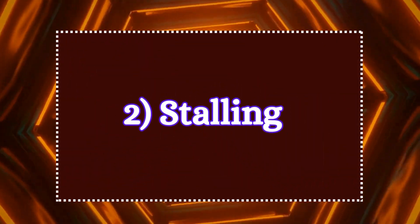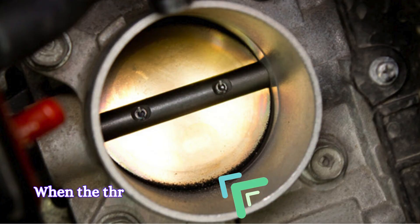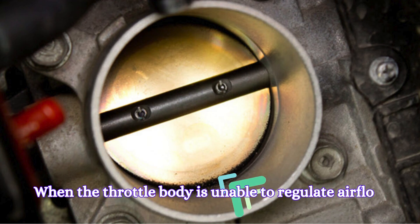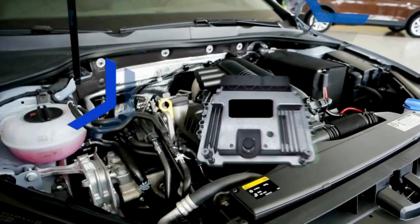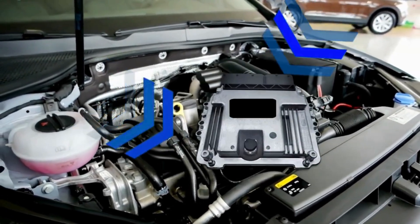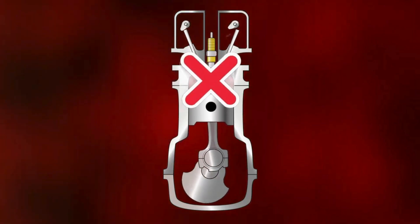2. Stalling. When the throttle body is unable to regulate air flow effectively, it causes an improper air fuel ratio. At low speeds or idle, the engine may not get enough air, causing it to stall because the combustion process is disrupted.